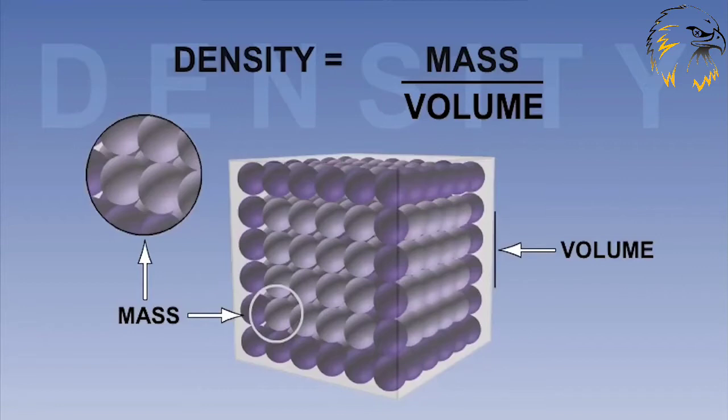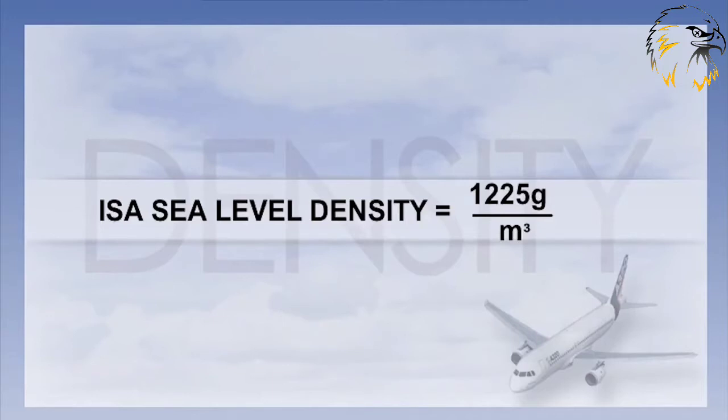If you remember from the lesson on the atmosphere, we talked about the standard atmosphere or ISA. At sea level, ISA stated that the density was 1225 grams per cubic meter. So we have a mass which is 1225 grams in a volume which is one cubic meter.